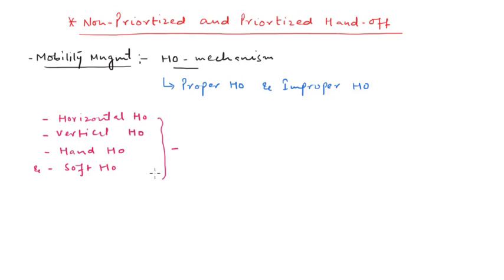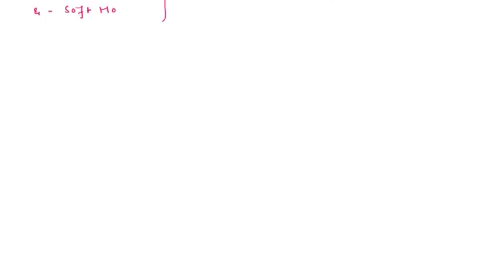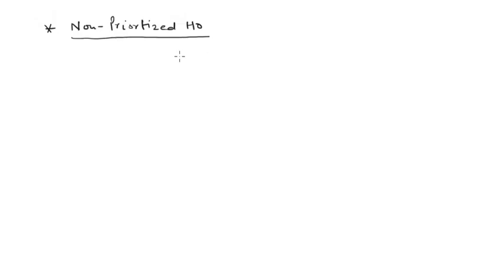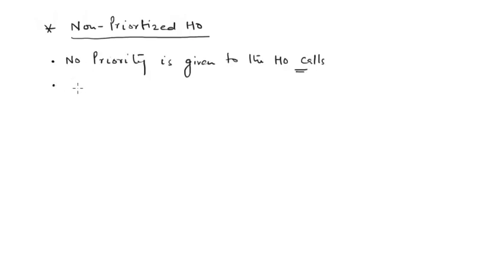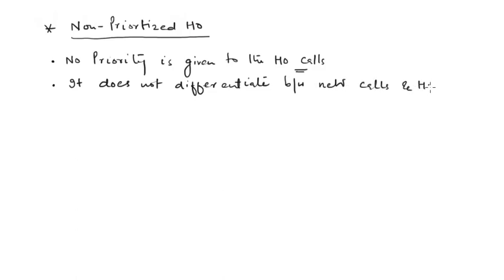These are the different types of handoff we studied in the previous lecture. In today's lecture we will study about non-prioritized handoff. In non-prioritized handoff, as the name suggests, there is no priority given to the handoff process. This non-prioritized handoff cannot differentiate between handoff calls and new call requests.